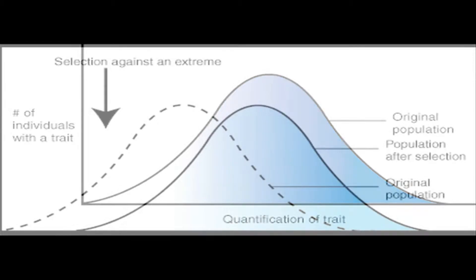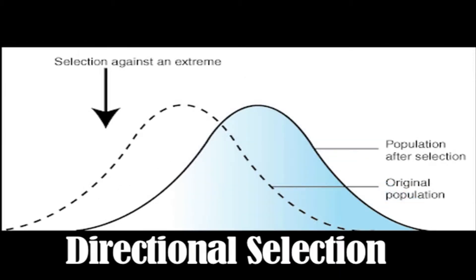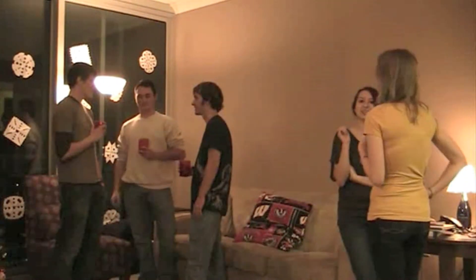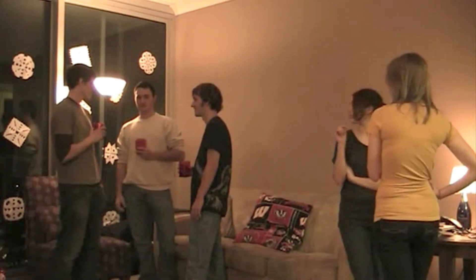This is an example of directional selection, in which one extreme trait is favored, and thus there is a shift in the frequencies of phenotypes towards the extreme trait. In our next example, we will observe male and female college students in another frequent habitat, a party. The males are having a good time engaging in their mating dance, trying to attract a mate.